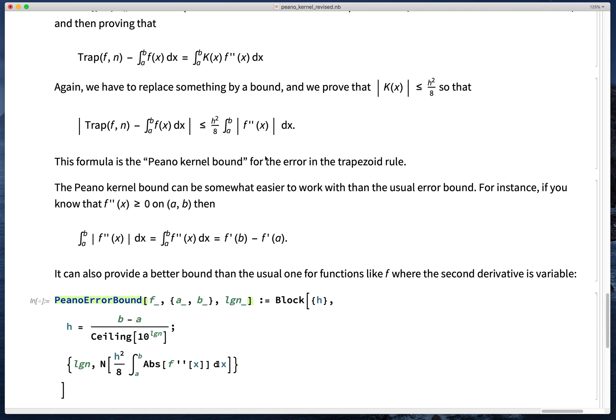Further, the Peano kernel bound pays attention to f'' all the way across the interval. So in places where f'' is only big in a small region of the interval, the Peano error bound can be better than the traditional error bound.